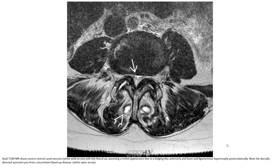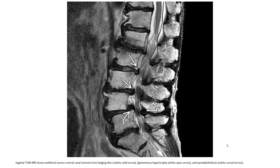Facet and ligamentous hypertrophy posterolaterally contribute to the stenosis. Note those directed synovial cysts from concomitant facet joint disease, indicated by the open arrow. Another example on sagittal T2WI MRI shows multilevel severe central canal stenosis from bulging disc, ligamentous hypertrophy, and spondylolisthesis.